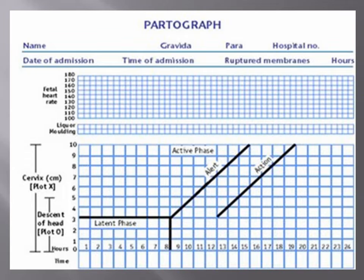For example, at 8 hours the dilatation is 4 cm, at 9 hours it is 5 cm, at 10 hours it is 6 cm, and so on — this represents full acceleration. The normal rate of progress is one centimeter per hour. If there is less than one centimeter per hour, we have to take action.